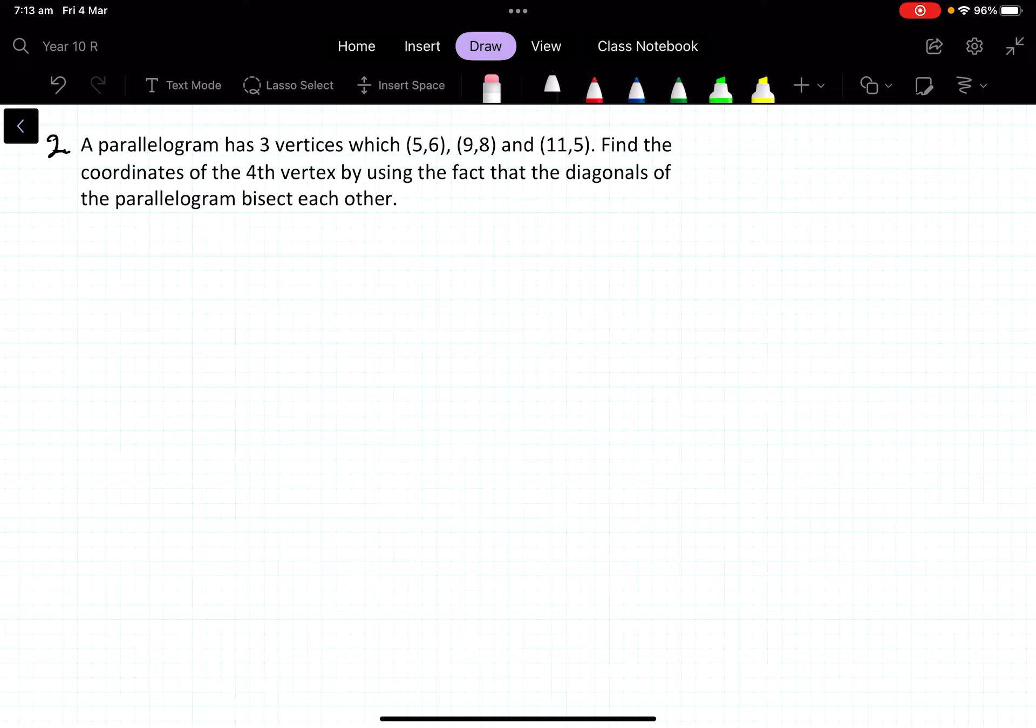Here we have example number two. This is a trickier one because we're often not familiar with parallelograms. So a parallelogram has three vertices which are (5,6), (9,8), and (11,5). Find the coordinates of the fourth vertex by using the fact that the diagonals of the parallelogram bisect each other.